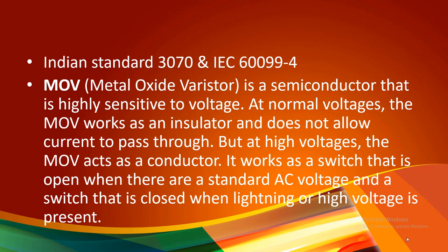The rated voltage can be upper or lower as per requirement. The metal oxide varistor works as an insulator at the designed normal voltage — for example 9 kV. At normal voltage, it has high resistance and does not allow current to pass. But when there is high voltage, the MOV becomes a conductor and current flows. It works as an open switch at standard AC voltage and a closed switch when lightning or high voltage is present.